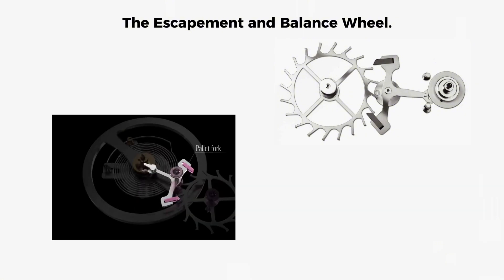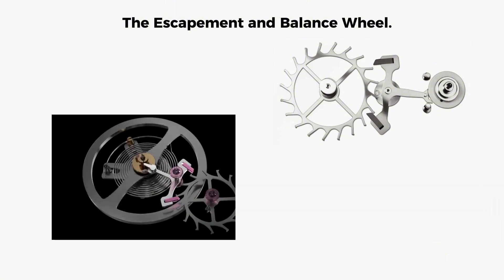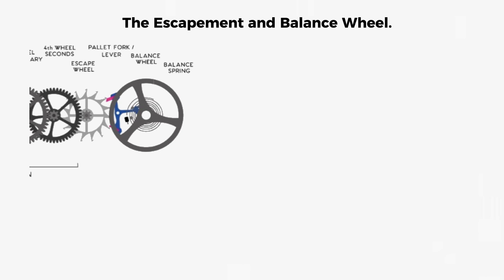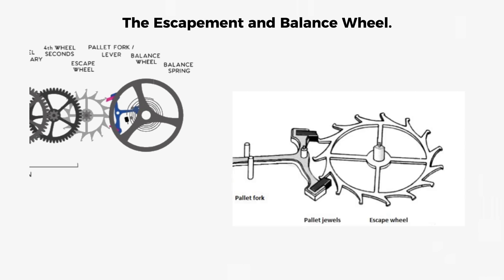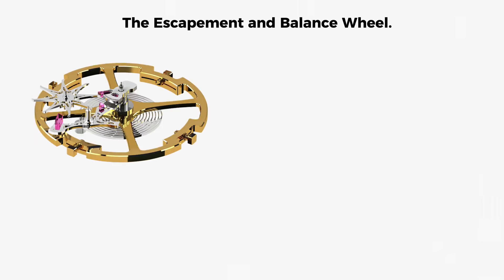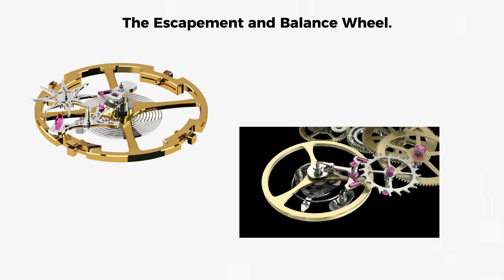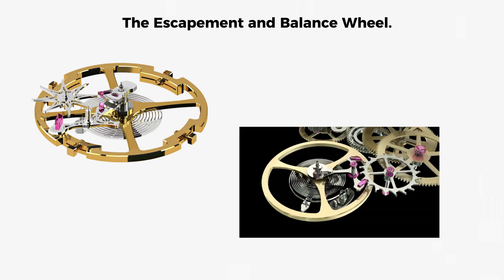The pallet fork and escape wheel form the escapement mechanism itself. The escape wheel is driven by the fourth wheel and has 15 specially shaped teeth. The pallet fork is a lever with two jewels, called pallet stones, positioned on either side. As the balance wheel swings, an impulse pin mounted on the balance wheel knocks the pallet fork back and forth.